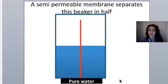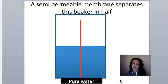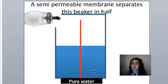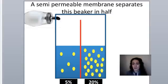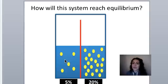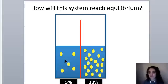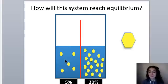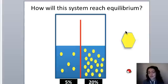Here's another type of diffusion. Imagine a beaker of water separated by a semipermeable membrane, creating two compartments — each with pure water. Then pour sugar into each compartment: 5% sugar on one side and 20% sugar on the other. The right side is more concentrated and sweeter. How will this system reach equilibrium? Look at the molecules involved: the two major molecules are glucose and water.